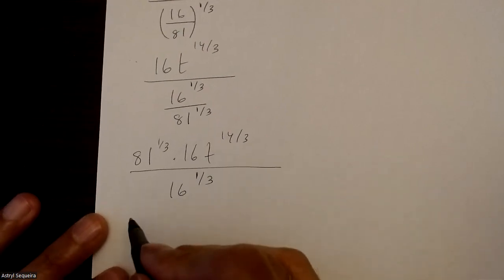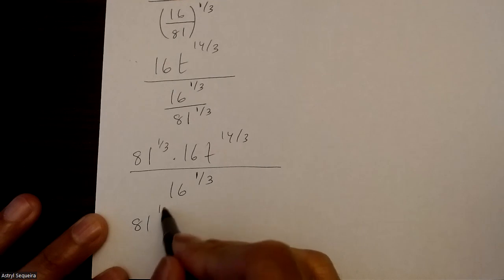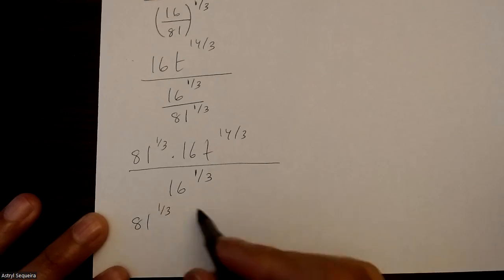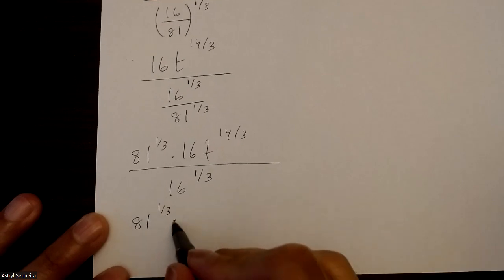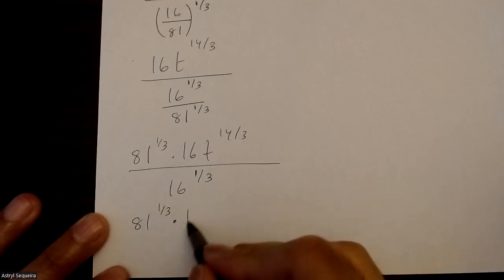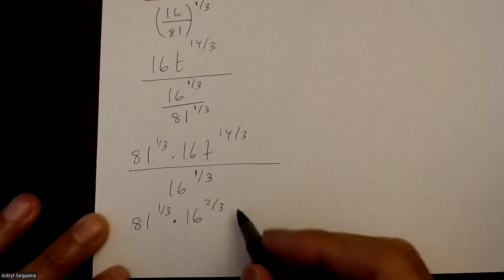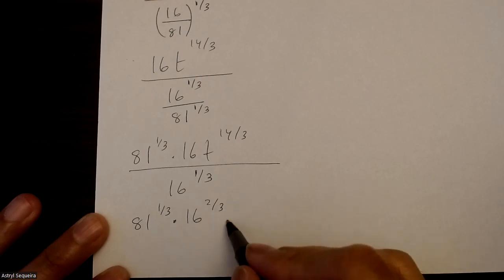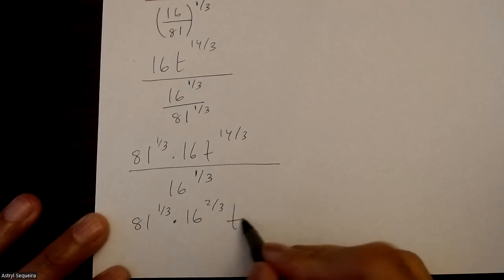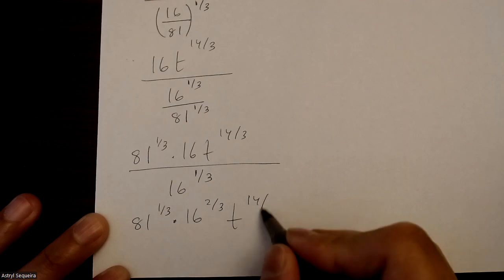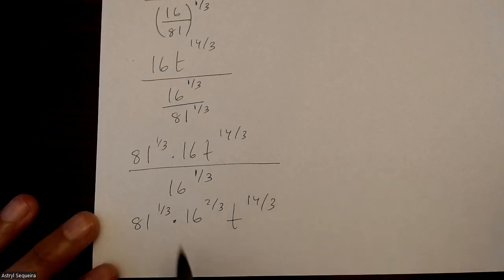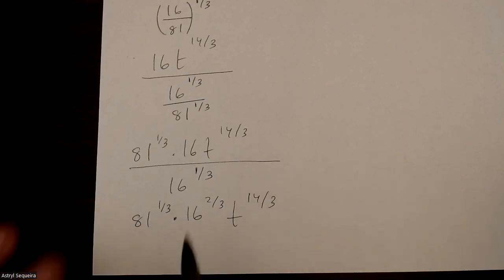And then I can simplify these two by subtracting my exponents. So that's 81 to the power of 1 over 3 times 16 to the power of 2 over 3 times t to the power of 14 over 3. And this would be my final solution.